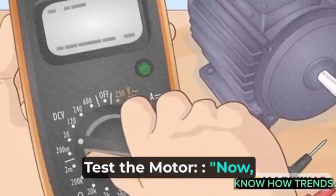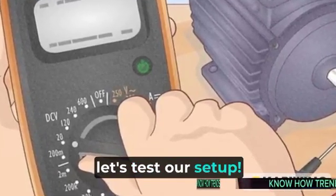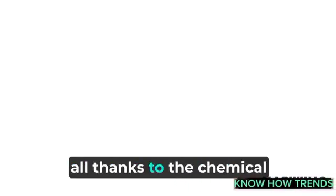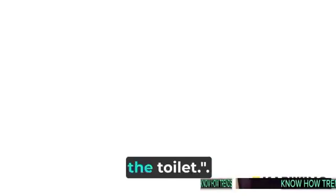Step 6: Test the motor. Now, let's test our setup. Turn on the motor connected to the electrodes. You'll see the mechanical energy generated by the motor, all thanks to the chemical reactions happening inside the toilet.